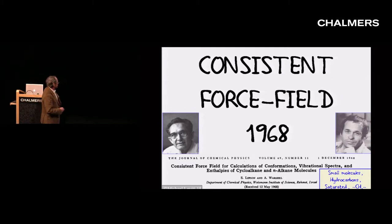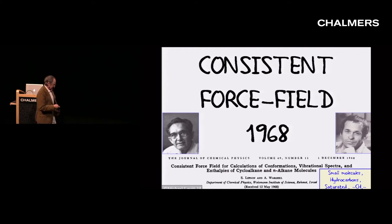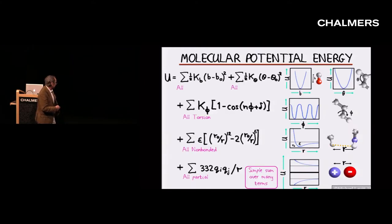This was an attempt to represent the potential energy of any molecule by a very simple potential function — you might call this a balls and springs potential function, something that almost anybody can understand. The idea is to represent the energy of a molecule by springs for bond length stretching and bond angle bending, torsional terms, van der Waals terms, and electrostatics.